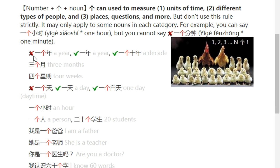You cannot say 一个年, but you have to say 一年 — just say 一年. But interestingly, you can say 一个十年 (one decade), because 十年 is a noun here.